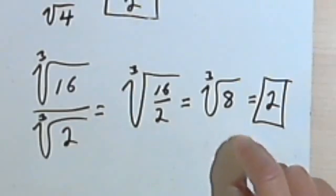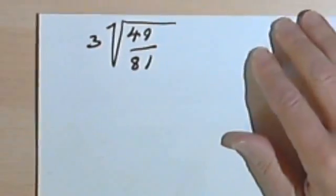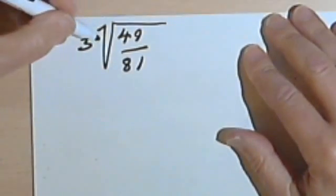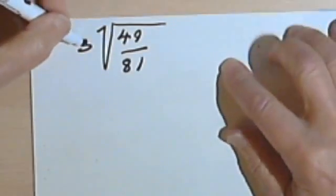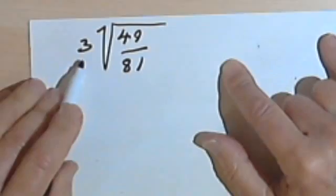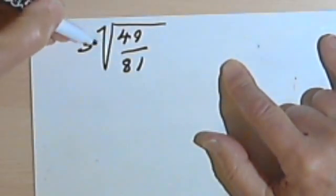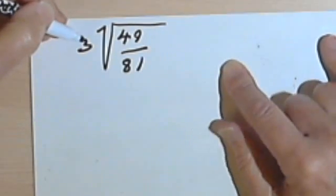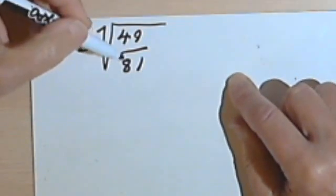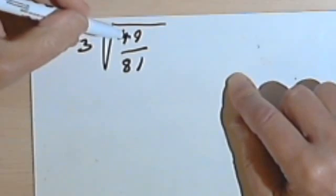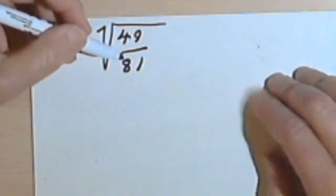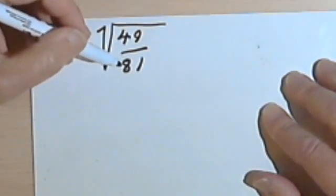Okay? Okay, more examples. This is just a slightly more complicated one because we've got something multiplying the whole fraction. But before we can deal with this 3, let's look at what's under the radical sign. I've got the square root of 49 over 81. Now I know that both of these are perfect squares.